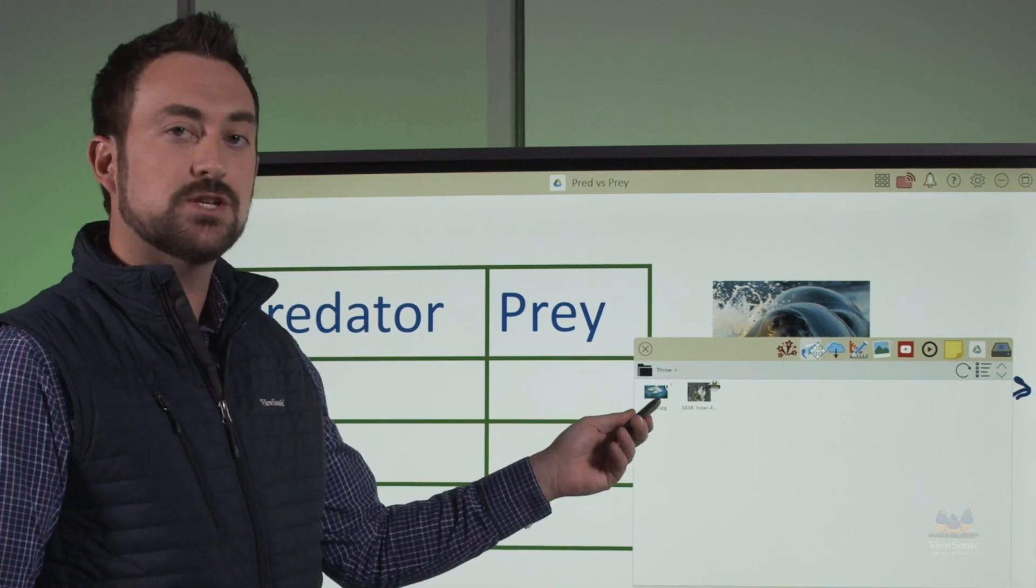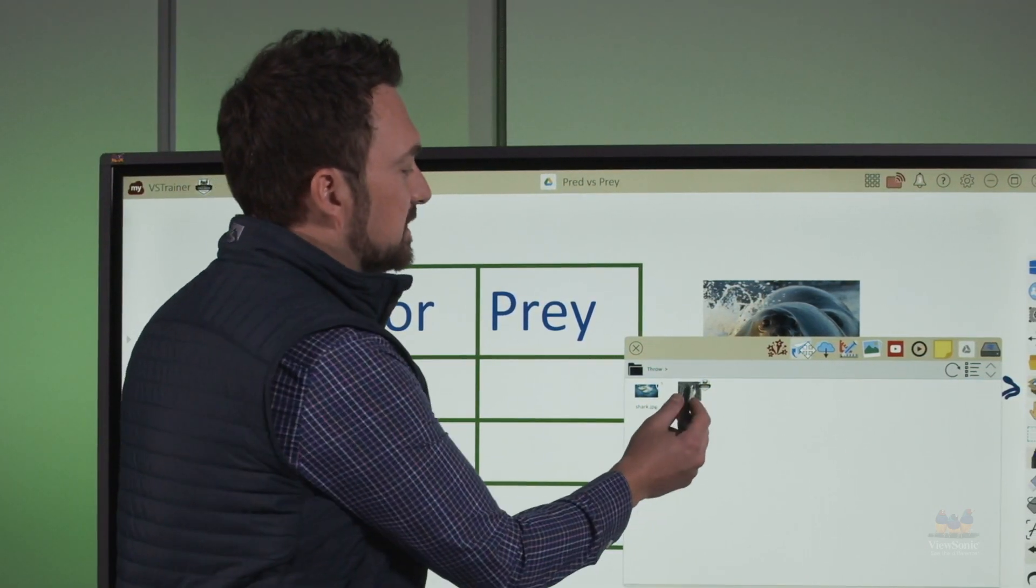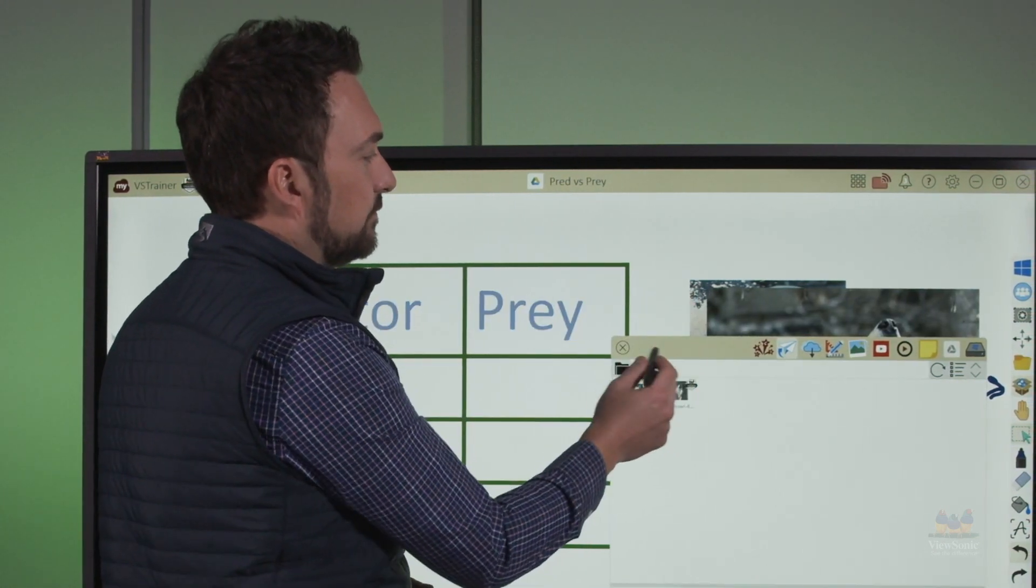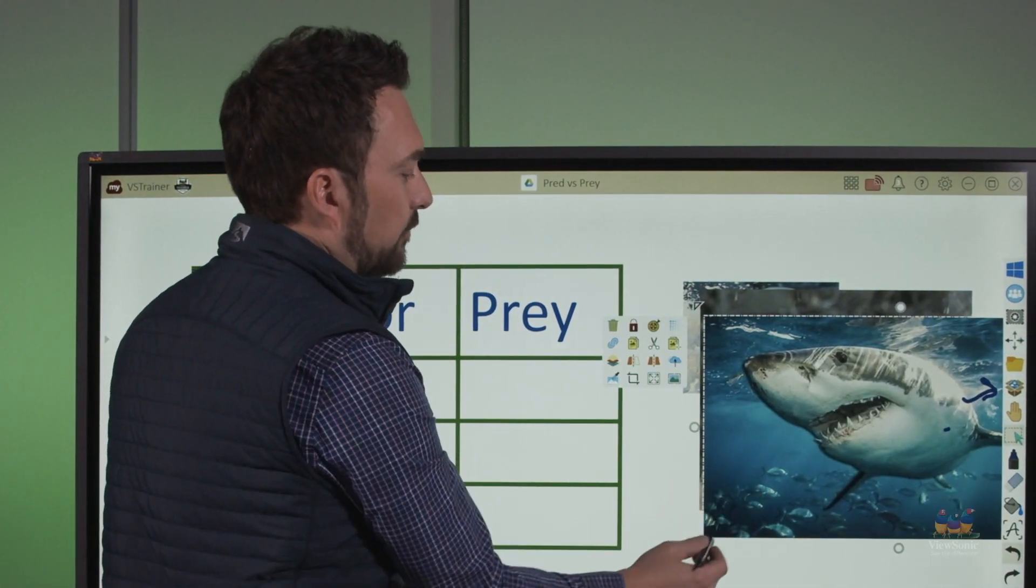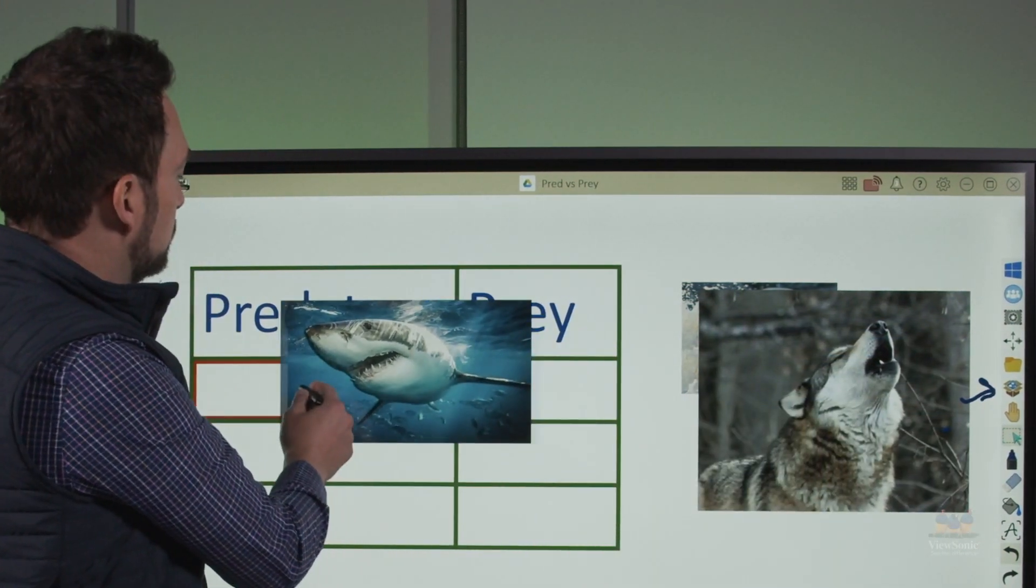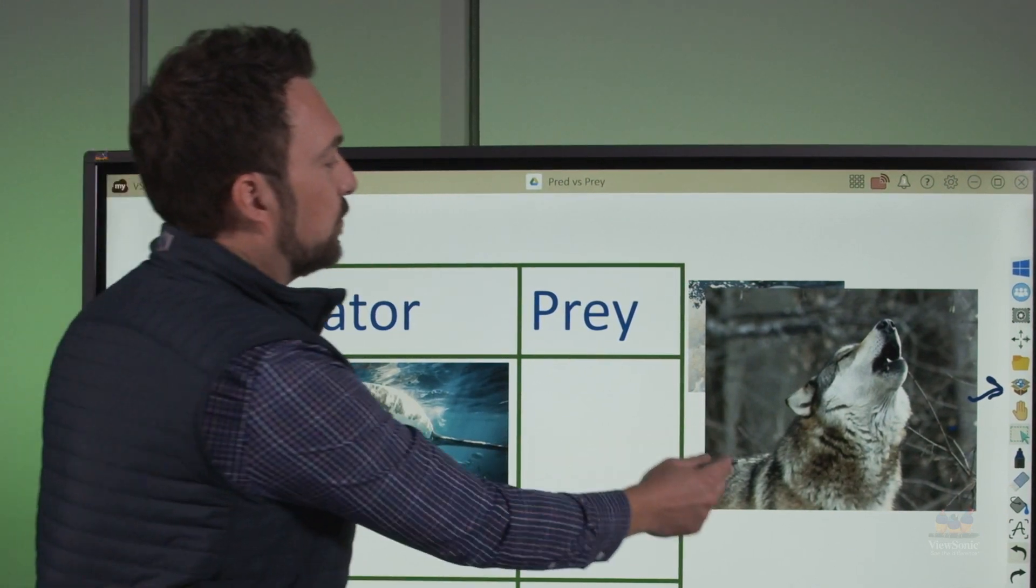I can see here that a shark has been thrown as well as a wolf. To use these images, I'm going to touch and drag them onto the canvas. From here, I can resize them. Now we can draw them into our table and sort them appropriately.